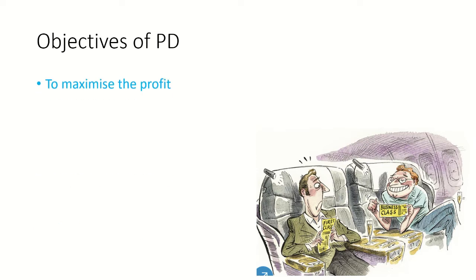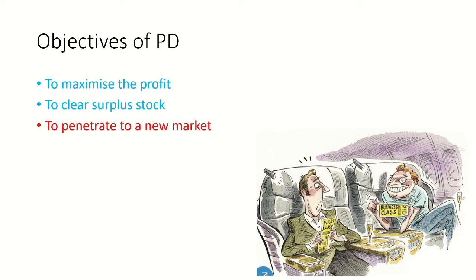The objectives of price discrimination are: first, to maximize profit by taking advantage of charging higher prices. Second, to clear surplus stock — if a firm has surplus stock, it reduces the price and arranges clearance sales or festival sales. Third, to penetrate into a new market by first reducing the price to enter, and later raising prices after establishing a presence.